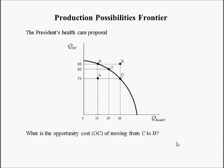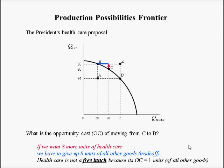What is the opportunity cost of moving from C to B? Maybe 90 units of healthcare isn't enough — politicians want to give us 98 units, going from 90% to 98% coverage. If we want 8 more units of healthcare, we have to give up 8 units of all other goods. So 8 divided by 8 is 1 — if we want one more unit of healthcare, we have to be willing to give up one unit of all other goods.